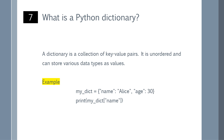What is a Python dictionary? A dictionary is a collection of key-value pairs. It is unordered and can store various data types as values. You can refer to the example shown on the screen.